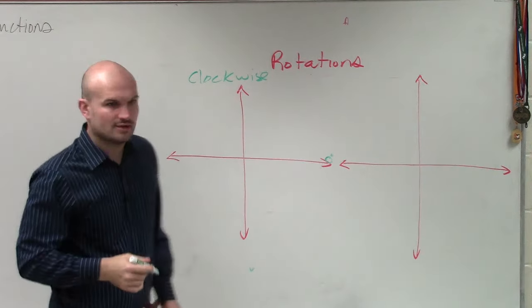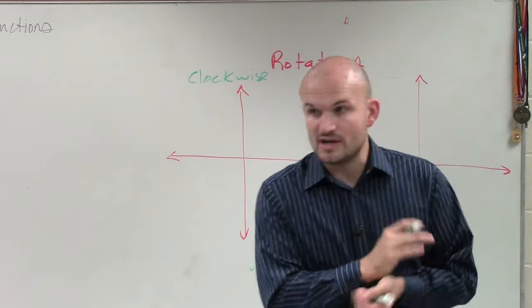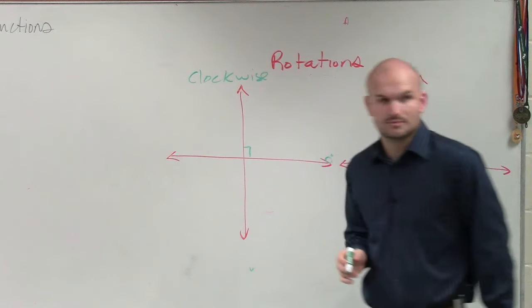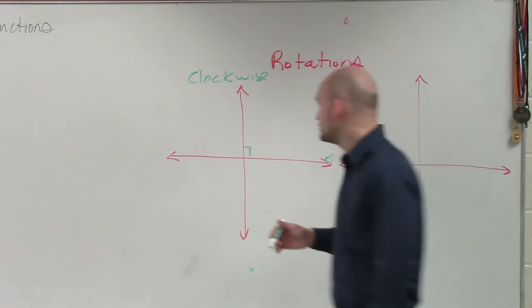Now, hopefully, you guys know we have our coordinate system. Our coordinate systems are perpendicular to each other. Therefore, they create a 90 degree angle. Our x and our y-axis are perpendicular to each other.